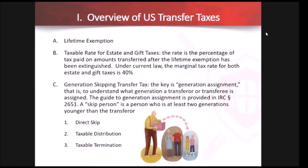We'll talk later about some advantages of doing it during lifetime versus at death. It's important to note that currently this exemption amount is indexed to inflation, so each year it's been going up. In 2020, the current amount is $11.58 million per individual; in 2019 it was $11.4 million. The current tax rate, regardless of whether it's for estate or gift taxes, is 40%. That's been the rate for a while and could change if Congress changes the law.